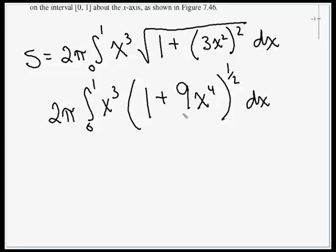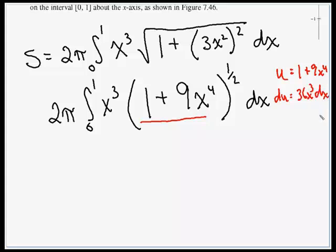It looks like we're going to do a u-substitution. The inner function is u = 1 + 9x⁴, so du = 36x³ dx. We have u to the one-half and need a 36x³, but we only have x³, so we tweak inside the integral with a 36 and balance with 1/36 out front.